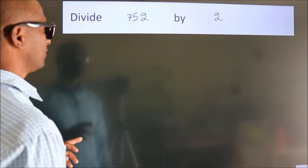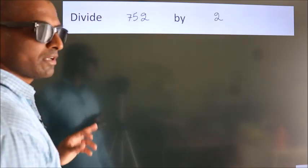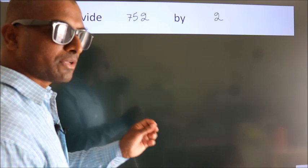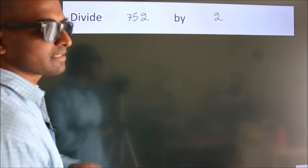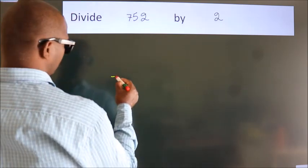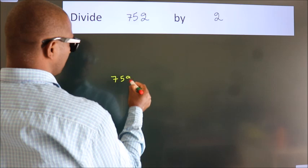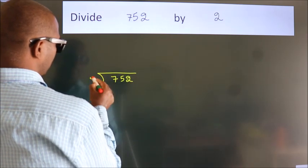Divide 752 by 2. To do this division, we should frame it in this way. 752 here, 2 here.